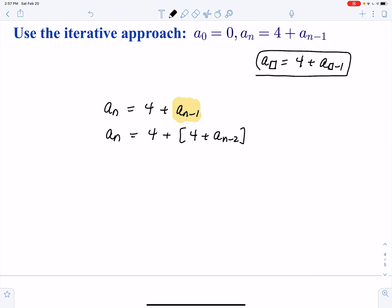Now I'm going to regroup a little bit, but I'm going to be very careful not to simplify too much because the point of this is to find a pattern. So I'm going to write this as 4 times 2 plus a sub n minus 2. Well, that's going to be equal to 4 times 2 plus, now what is a sub n minus 2 according to the sequence? It's 4 plus a sub n minus 3.